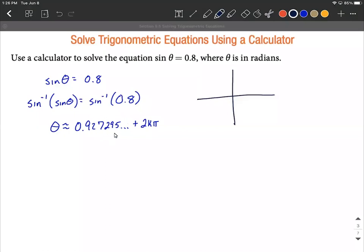This turns out being a first quadrant angle. And when sine is equal to a positive ratio on the right hand side, the calculator is going to return an angle that's in the first quadrant. So we've got an angle in the first quadrant.